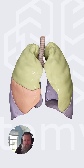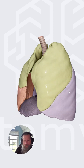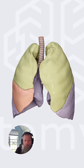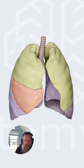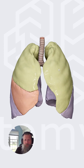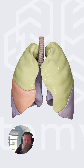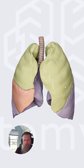The upper lobe, this one here in yellow, is known as the superior lobe, and then this lobe here is known as the inferior lobe, the lower lobe. On the right side, this third lobe is known as the middle lobe. So we have superior, middle, inferior, and then on the left side superior and inferior.